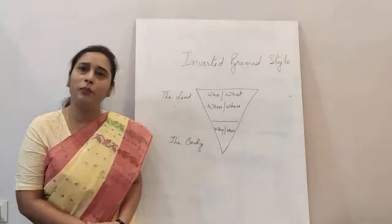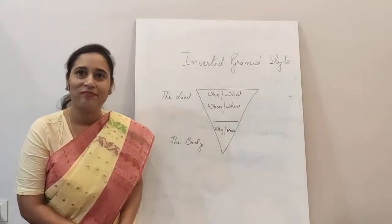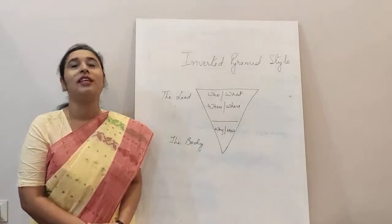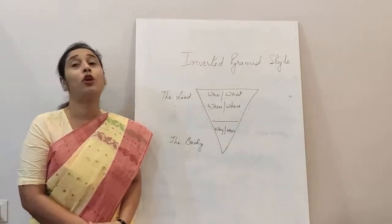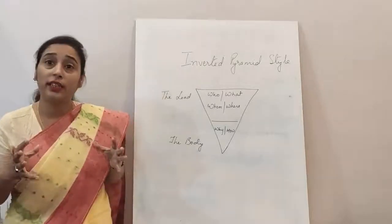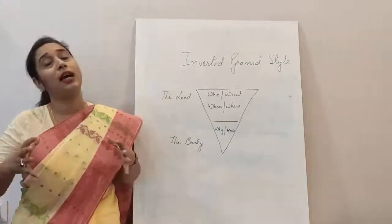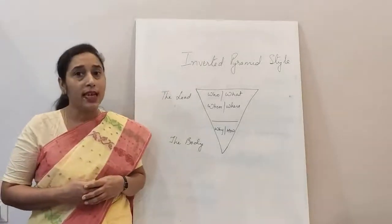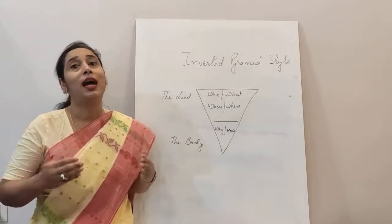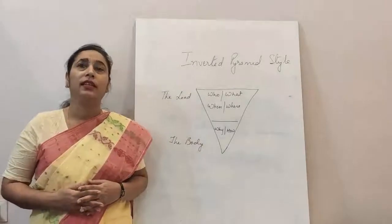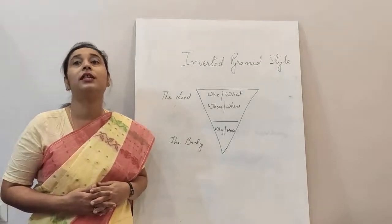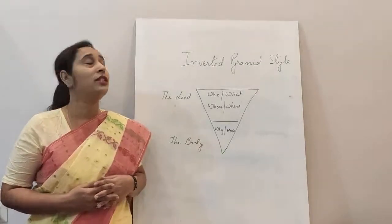How to write a newspaper report? The news report starts with the most important idea. The most important information comes first. The second important information comes next, and so on. This is called the inverted pyramid style.